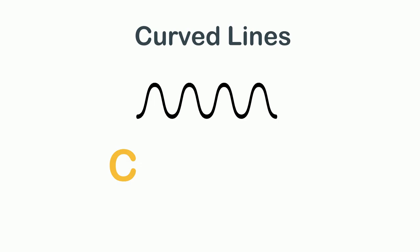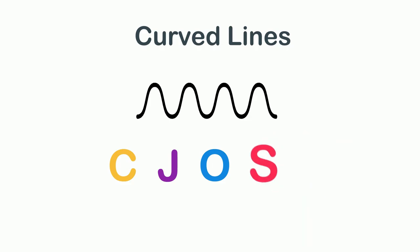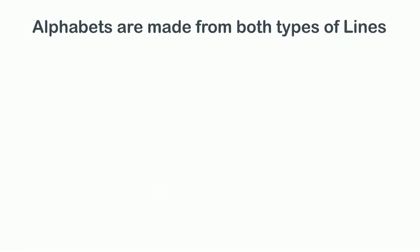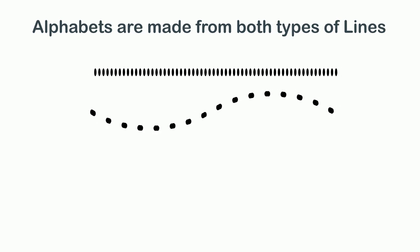Now for curved lines — C is made from a curved line. Other alphabets made from curved lines are: J, O, S, and U.